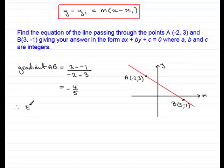So, therefore, what I can say is, therefore, the equation of the line is going to be y minus y₁. Now, let's just take the point A. So, we have y - 3 equals the gradient, which would be -4/5, multiplied by x minus x₁, the -2.